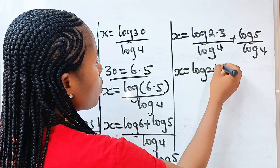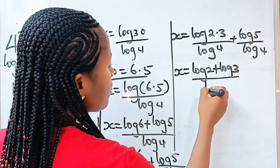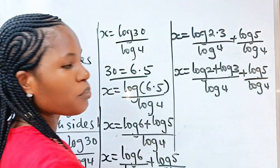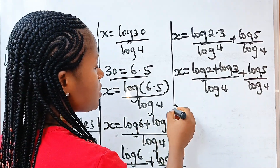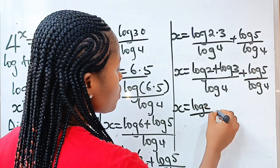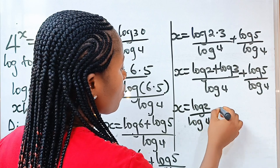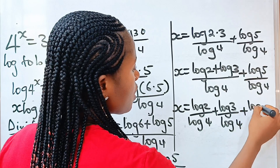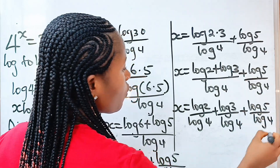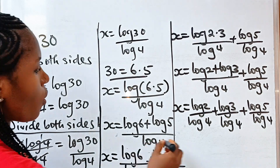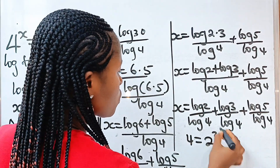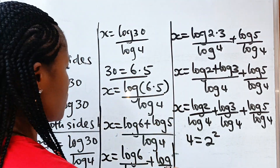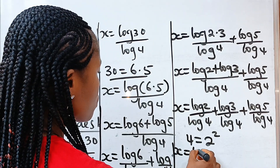Applying the product rule, we write this as (log2 + log3) divided by log4, plus log5 divided by log4. Now, 4 is equal to 2 squared, so log4 can be written as log(2²).